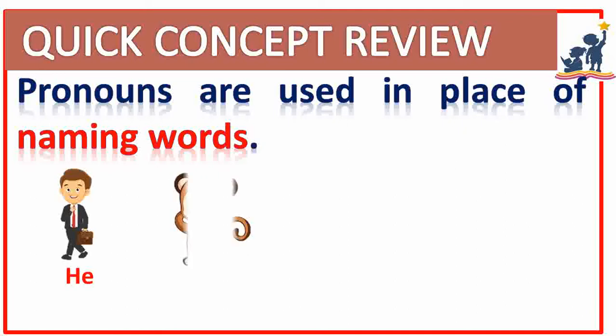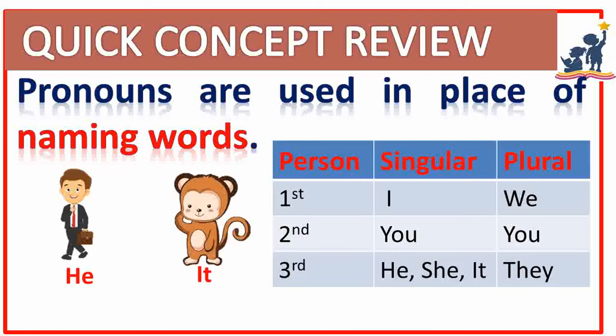Pronouns are used in place of naming words. First person singular form is I; first person plural form is we. Second person singular form is you; second person plural form is also you. Third person singular forms are he, she, it; and third person plural form is they.